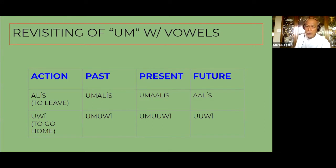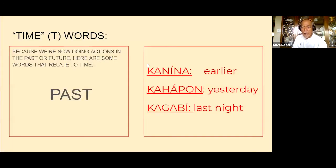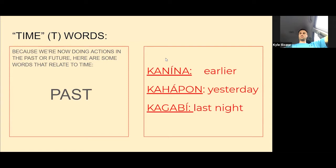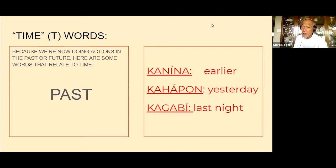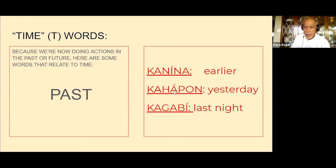The conjugation of action words specifies our use of time. For past tense time terms, we have kanina, kahapon, kagabi. Some of you figured out that kahapon ng gabi is the same as kagabi — last night. Or if you want to say 'yesterday evening,' you can say kahapon ng gabi.